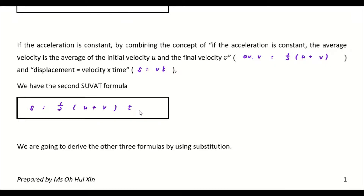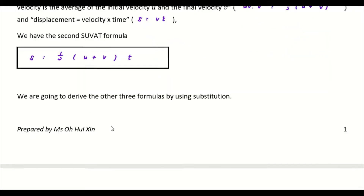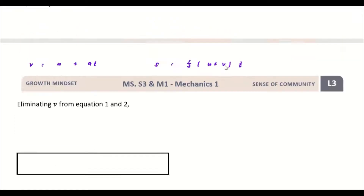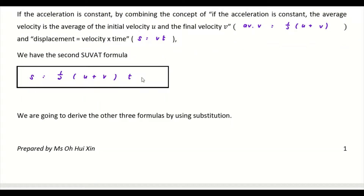We have our two base equations: equation 1 is v = u + at, and equation 2 is s = ½(u + v)t. Notice that the second SUVAT formula has no a in it. We will now derive the remaining three formulas by substituting different variables into these two equations.